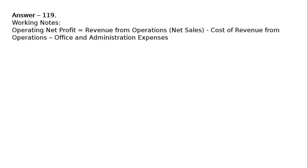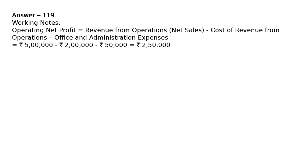Answer 119, working notes: operating net profit is equal to revenue from operations (net sales) minus cost of revenue from operations minus office and administrative expenses. Operating net profit equals rupees 5 lakhs minus rupees 2 lakhs minus rupees 50,000, which equals rupees 2 lakh 50,000.